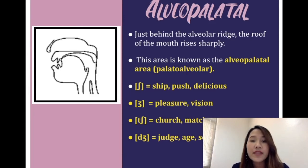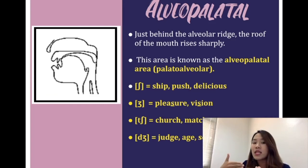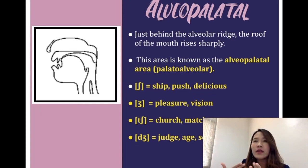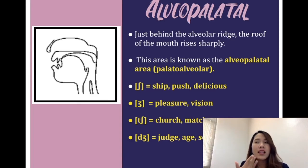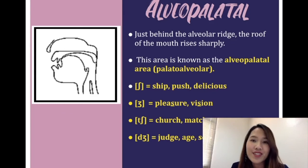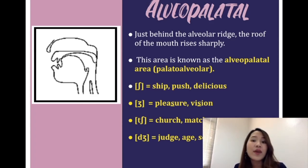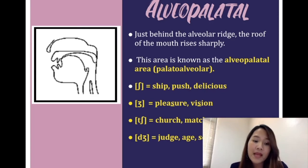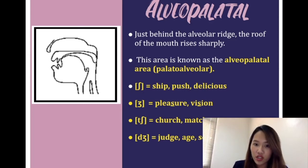The next place of articulation is alveopalatal, also called palato-alveolar. This is the area just behind the alveolar ridge where your mouth rises sharply. We use our tongue to touch that area to produce the sound. The sounds from this area include /tʃ/ as in 'chip,' and /dʒ/ or /ʃ/ sounds.